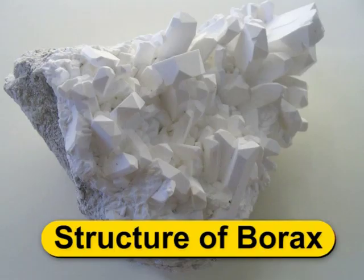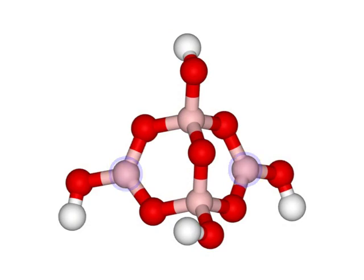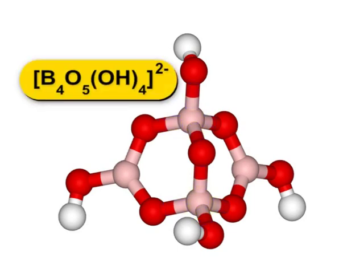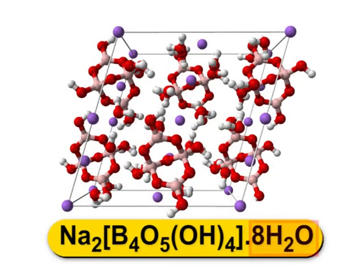Children, let us have a look at the structure of borax. As you see on the screen, in borax, two boron atoms have triangular geometry while the remaining two atoms are tetrahedral. The structure of B4O5(OH)4 2- is shown on the screen. The remaining eight water molecules are associated with two sodium positive ions. As a result, the structure of borax is also represented as Na2B4O5(OH)4·8H2O.